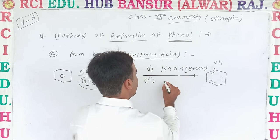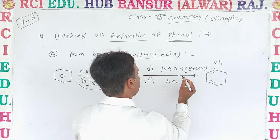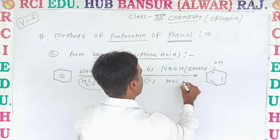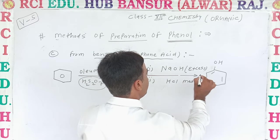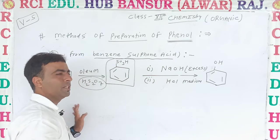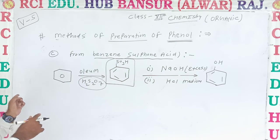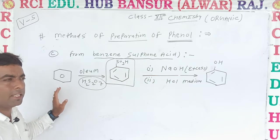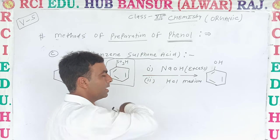After that you need to use HCl medium — acidification is required. The reaction will be the same as what we studied in the chlorobenzene section. You can see the same reaction here.